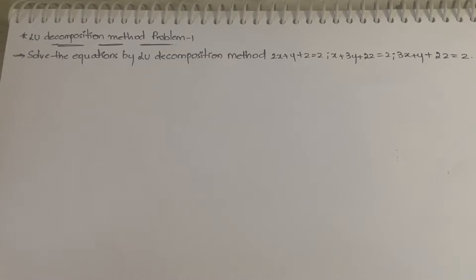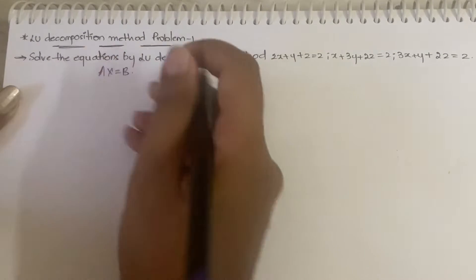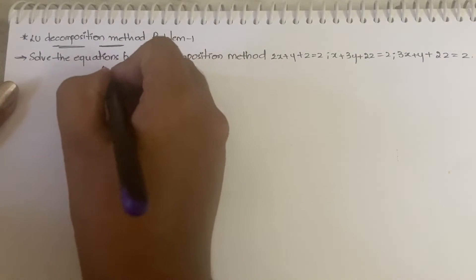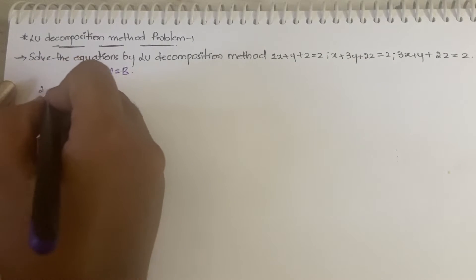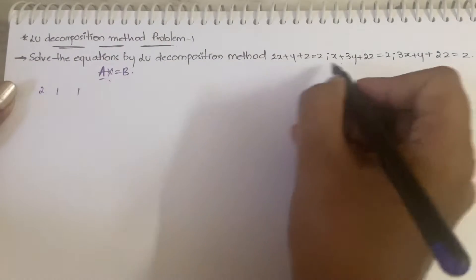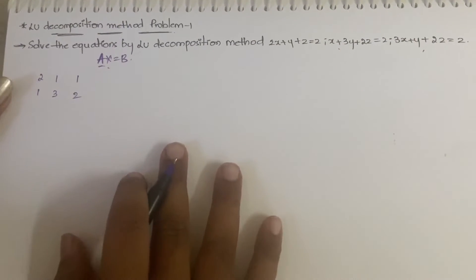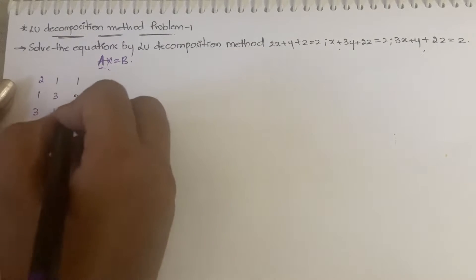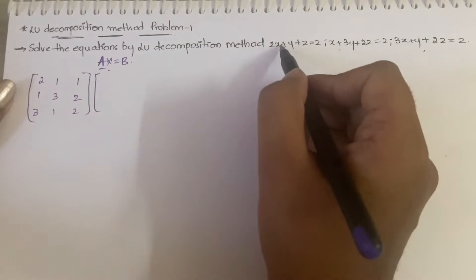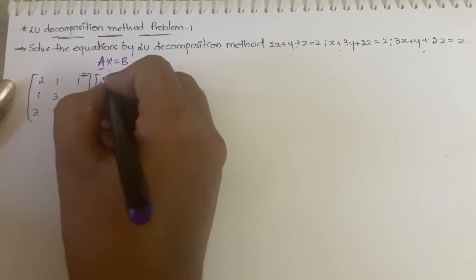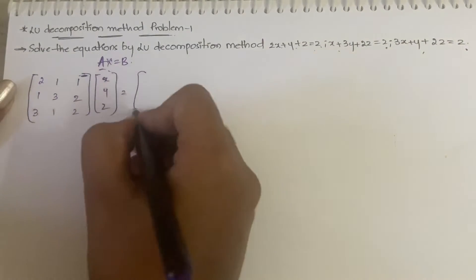First, you need to write the matrix in the form of AX = B. You need to identify what is A, what is B. A is nothing but the coefficient matrix — write the coefficient matrix 2, 1, 1, 1, 3, 2. X is nothing but x, y, z and B is nothing but 2, 2, 2, the constant matrix.